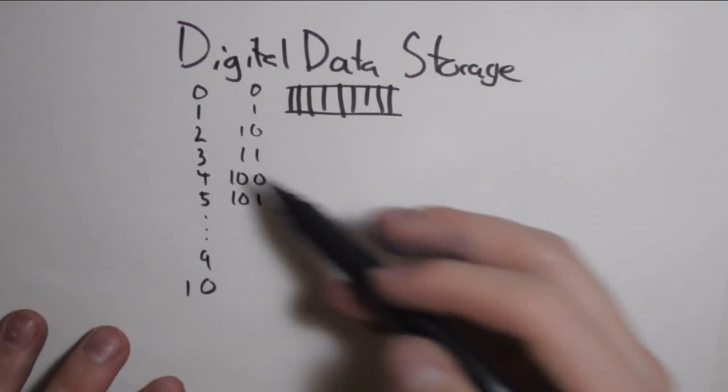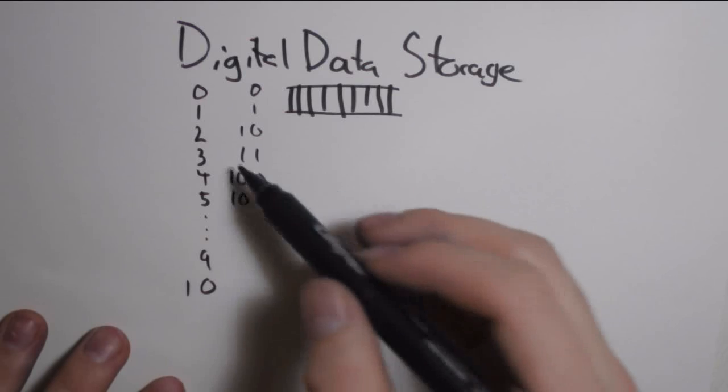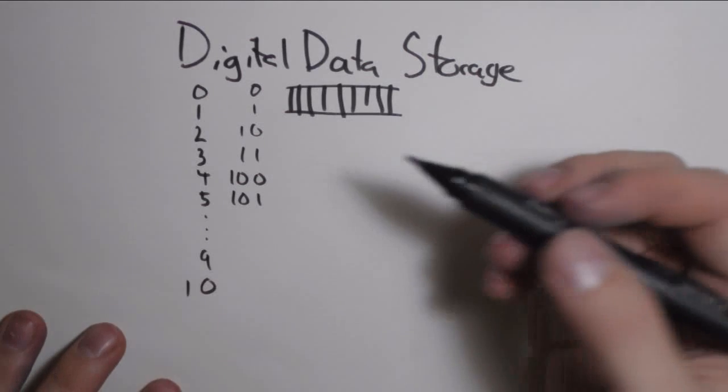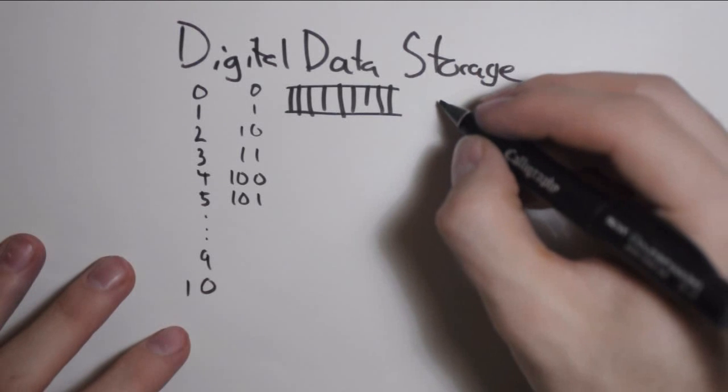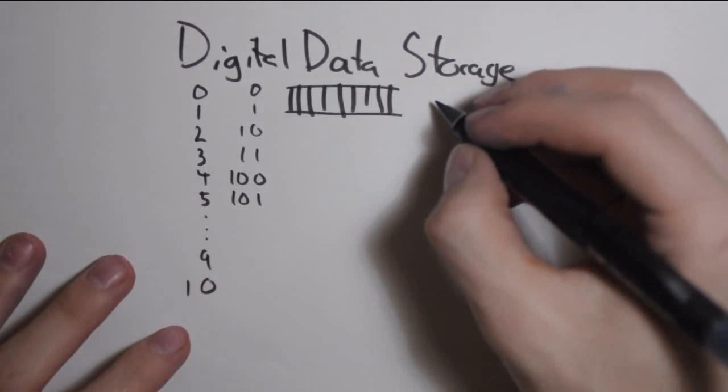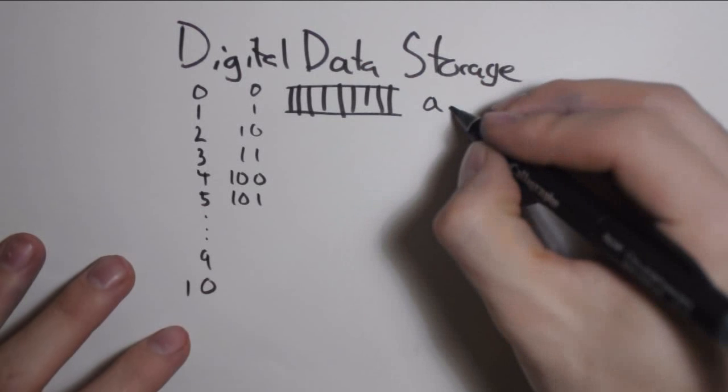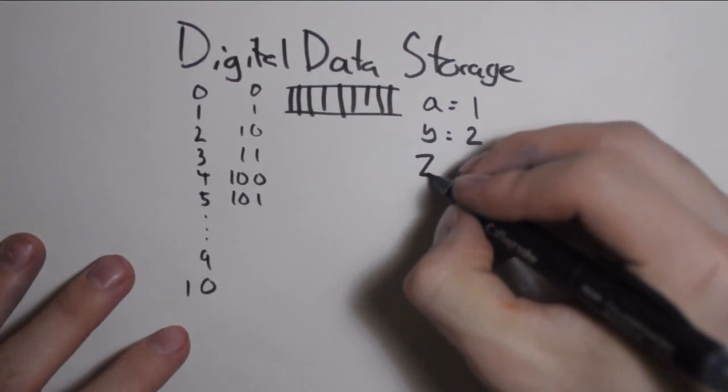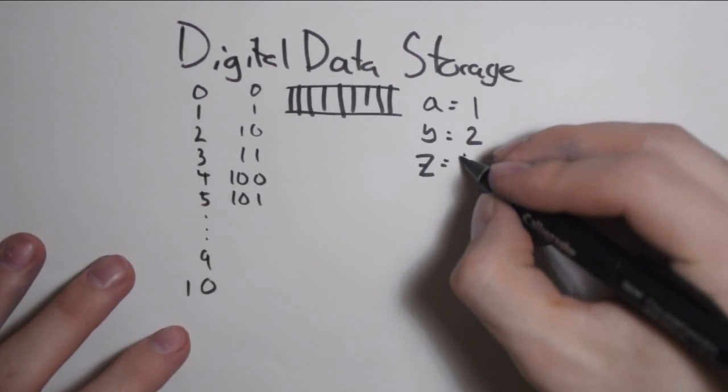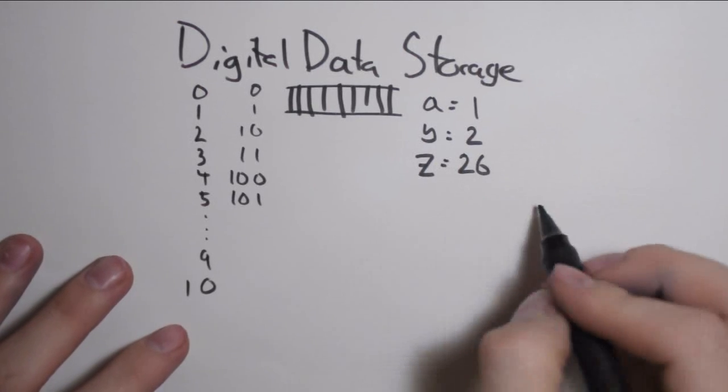Text files, for example, are stored using 1 byte per letter, and it's really simple. It's basically done the same way you wrote notes in 3rd grade when you didn't want your teacher to read them. You got A is 1, B is 2, and Z is 26.